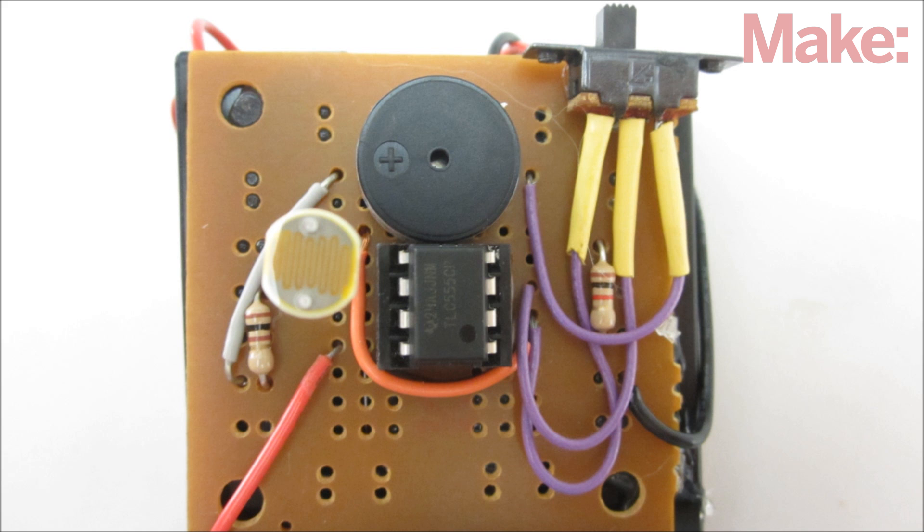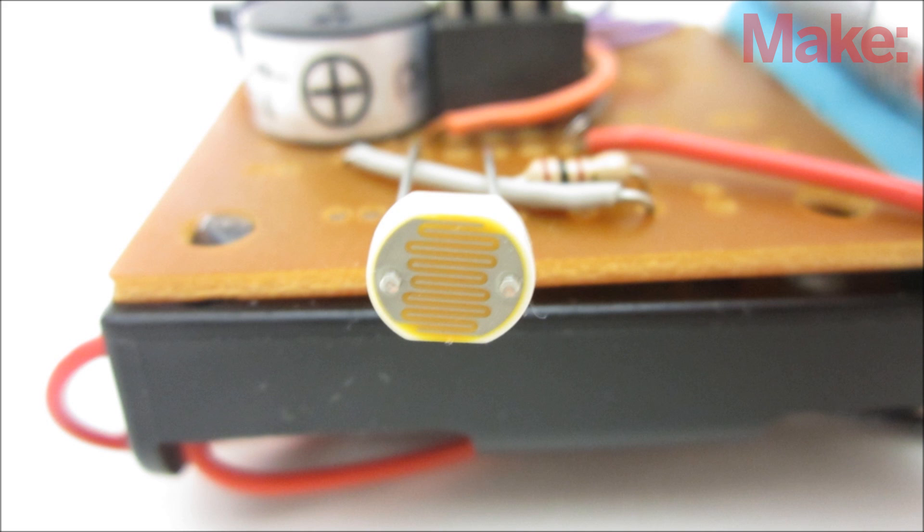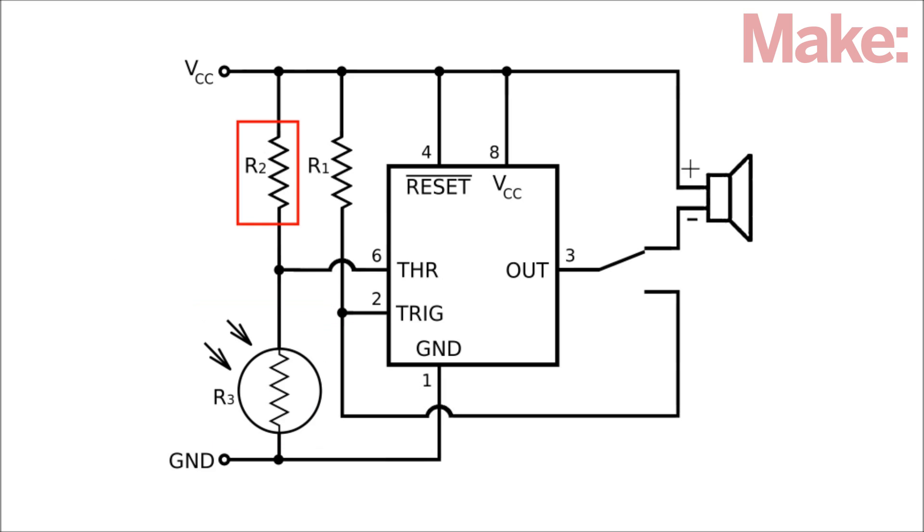The alarm circuit is built around a 555 timer IC. It uses a photoresistor to detect the light from the laser pointer. The photoresistor is wired in series with a second resistor that together form a voltage divider.